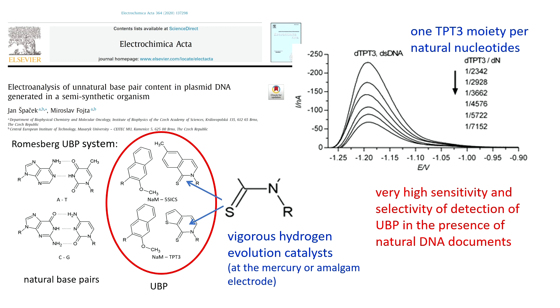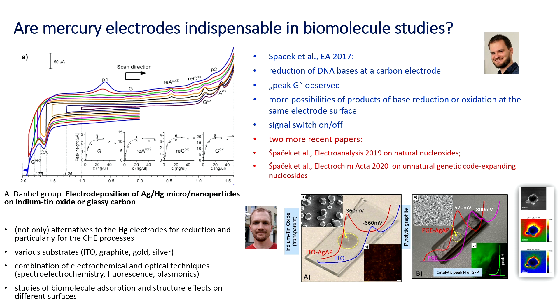We were able to detect this unnatural base pair in plasmid DNA in a very large excess of natural DNA components. Romesberg and his co-workers found this very impressive, because in this case the electrochemistry was clearly much more sensitive and specific than the methods they usually use. And you may have noticed I was talking mainly about mercury electrodes, so one can ask about using more environmentally friendly electrodes.